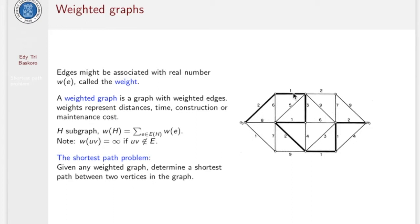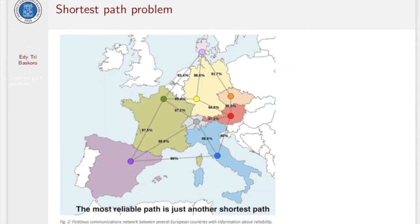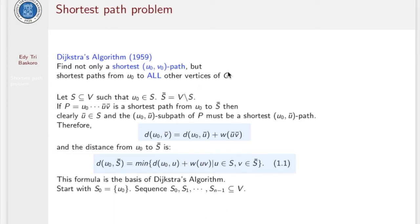The bold lines represent a shortest path from u0 to v0. This is one example of a real problem for the shortest path problem — to find a shortest path from station A to station B when you use the MRT. And another example: the shortest path problem in the form of finding the most reliable path from one city to another. In this section, we are going to explain one of the algorithms to solve this shortest path problem: this is Dijkstra's algorithm, founded in 1959.